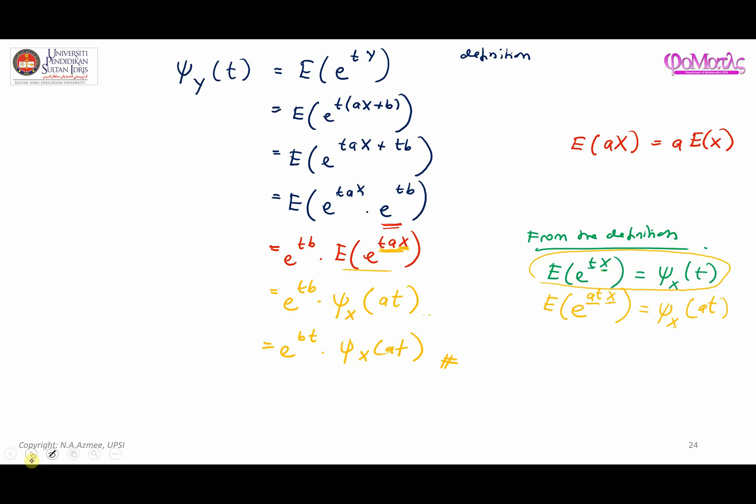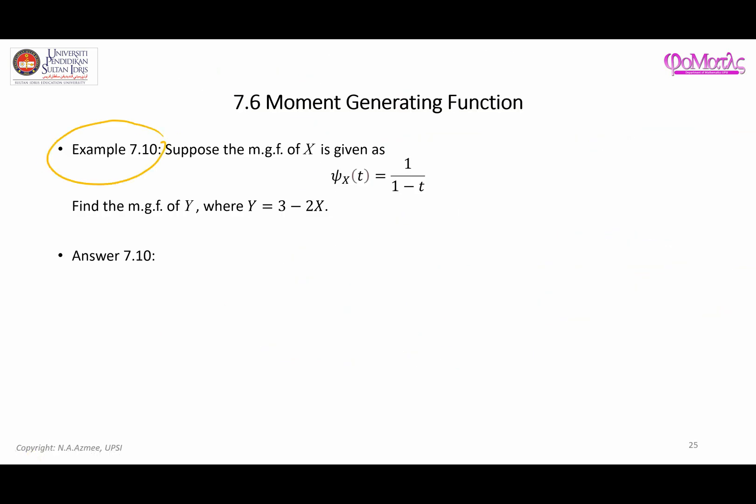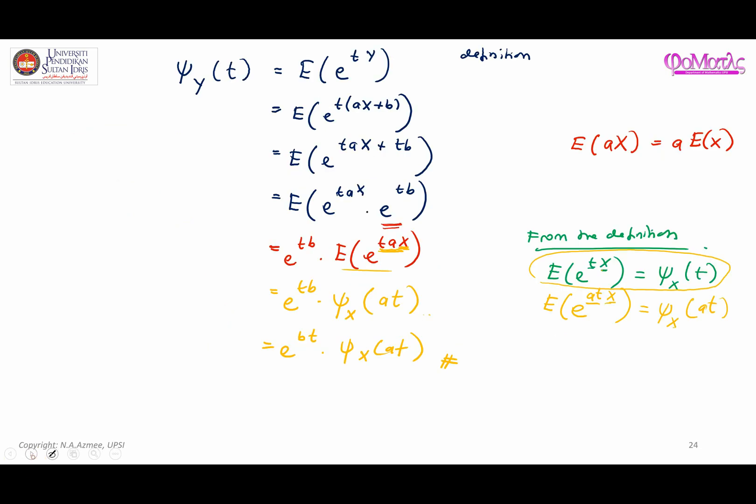Now, let's move to a practical example related to the application of the theorem given. Here, we have random variable X, where the moment generating function is already given as 1/(1-t). And now, the question is asking you to find the mgf of a new random variable Y, where Y here clearly depends on X as 3 - 2X. Based on that, it should occur to you that by hook or by crook, we are going to use some information related to X.